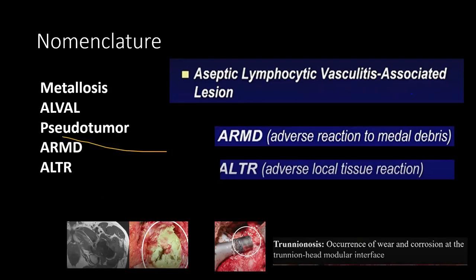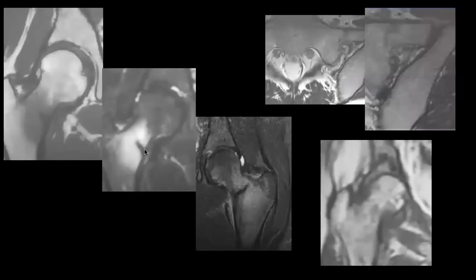There are various terminologies and different nomenclature for almost the same prosthetic complications — like metallosis, ALVAL (aseptic lymphocytic vasculitis-associated lesion), pseudotumor, ARMD (adverse reaction to metal debris), and ALTR (adverse local tissue reaction). MRI is very sensitive for catching stress fractures. This is a stress fracture in the femoral neck, this is an acetabular fracture, and this is a sacral fracture. MRI is very sensitive in detecting stress fractures because of its ability to detect edema and fracture lines. Thank you very much.